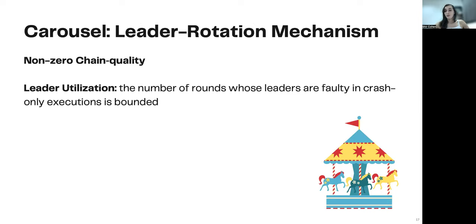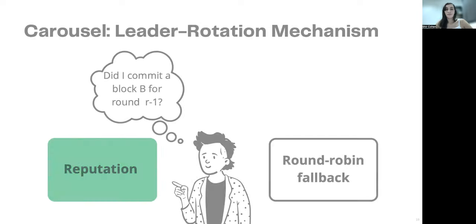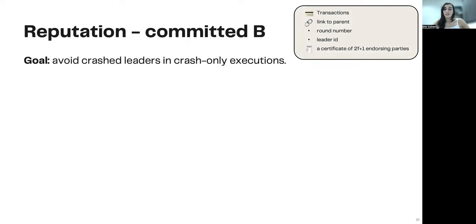So let's find a better solution. In this work, we present carousel, a leader election mechanism that provides two important properties. First, it keeps electing correct parties, making sure that we have a non-zero chain quality. And secondly, it is guaranteed that in crash-only executions, the number of faulty leaders elected is always bounded. So how does carousel work? Well, at the beginning of each round, each party asks itself whether it committed a block for the previous round. Then it can go in one of two paths. If it did commit a block, then it uses what we call reputation.